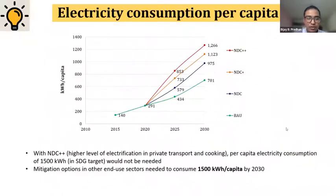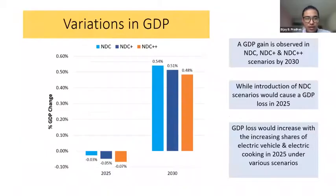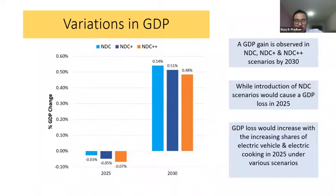Using a CGE model, we also analyzed the change in GDP. A GDP gain is observed in all three NDC scenarios, although it is around 0.5% only. In 2025, with the introduction of NDC scenarios there would be a loss in GDP, but the loss is very minimal.